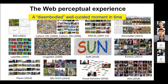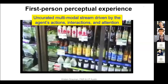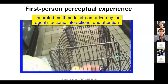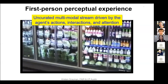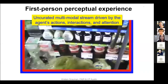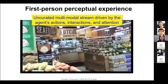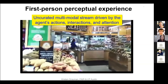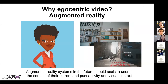Let me give some big-picture context. The field has come far looking at internet photos, images and videos from a third-person perspective — captured in a disembodied way at well-curated points in time. What we're looking to push forward is the first-person perceptual experience instead: uncurated video, perhaps from an always-on camera, with a multimodal stream from audio, visual, IMU, and others.